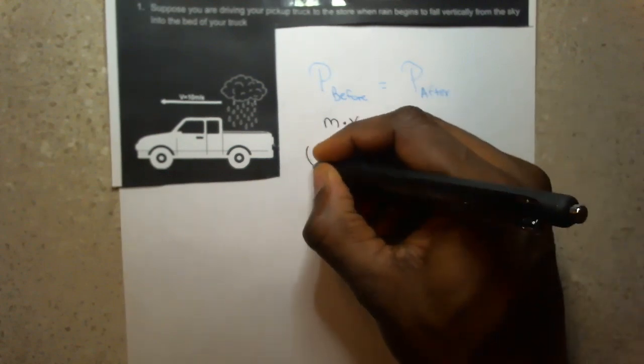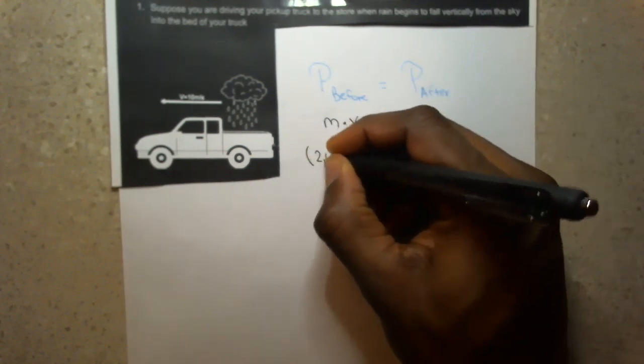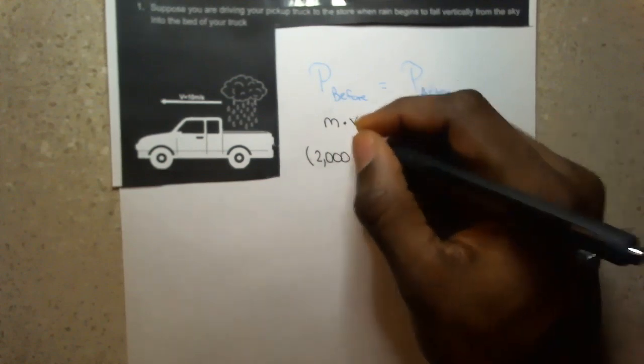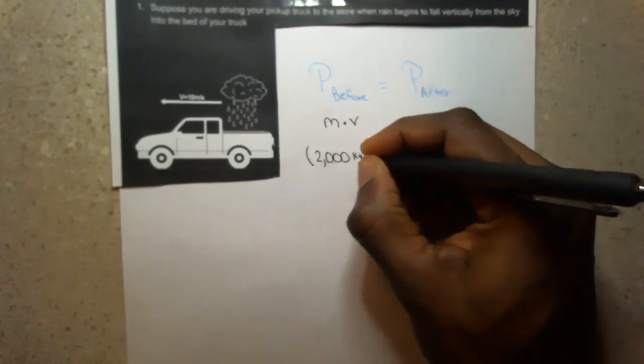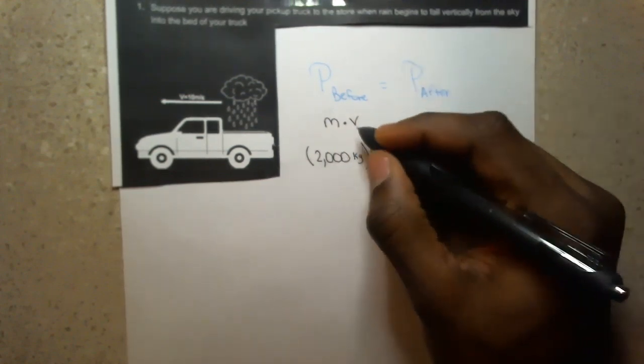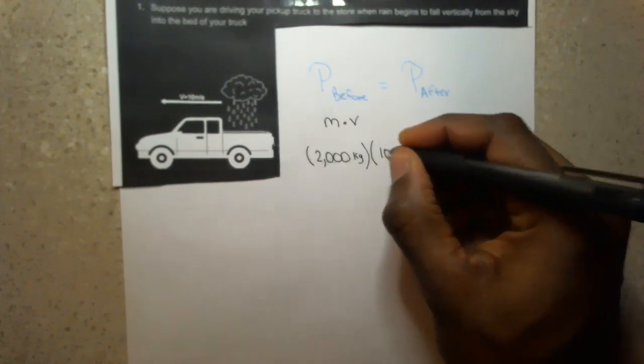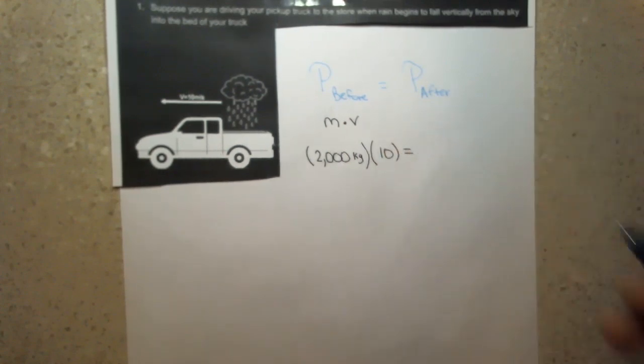So when we do P before and we do mass times velocity, we're only focusing on the mass of the truck here. And I'm going to make up a mass just for our purposes. I'm going to say it's 2,000 kilograms. And then V here is 10. That's our whole situation for the momentum before.